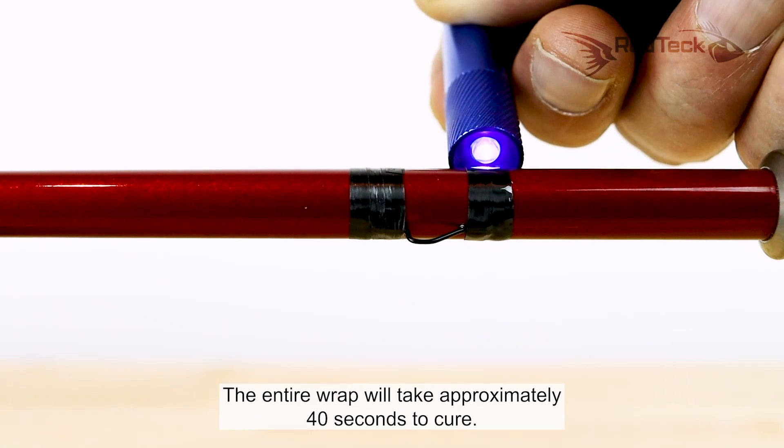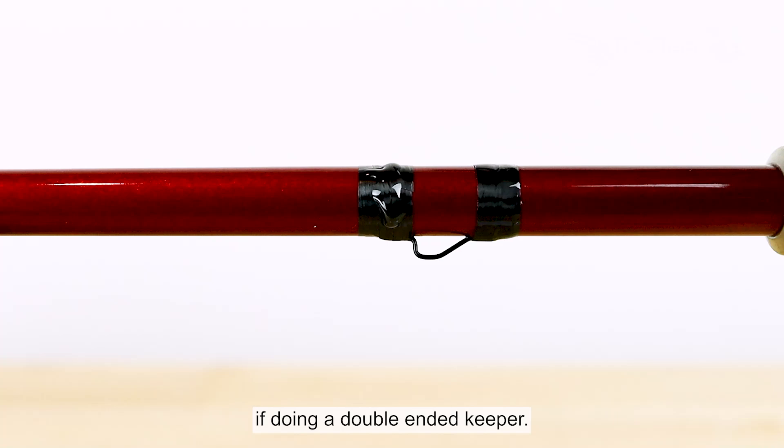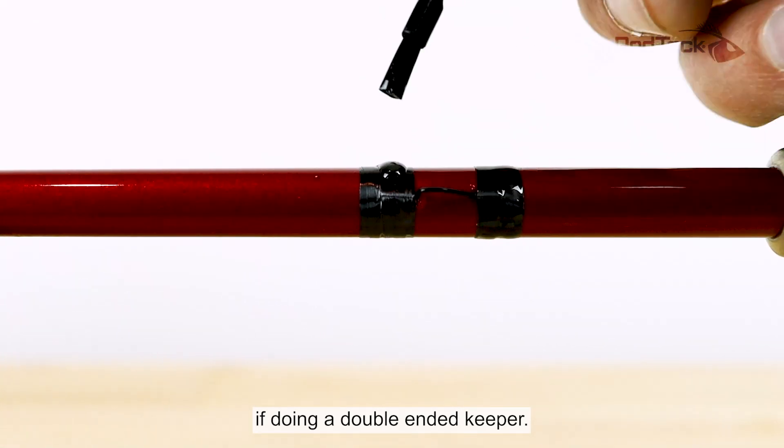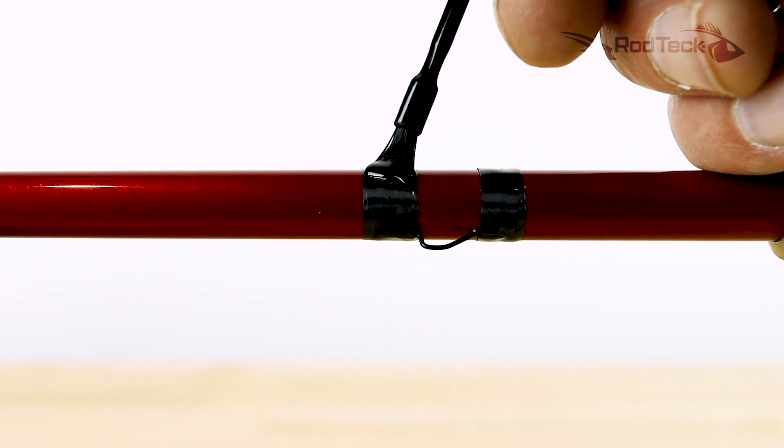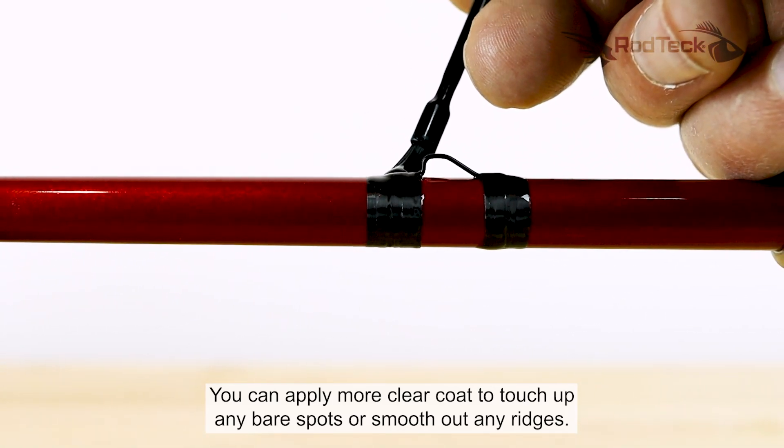The entire wrap will take approximately 40 seconds to cure. Repeat this process for the other foot if doing a double ended keeper. You can apply more clear coat to touch up any bare spots or smooth out any ridges.